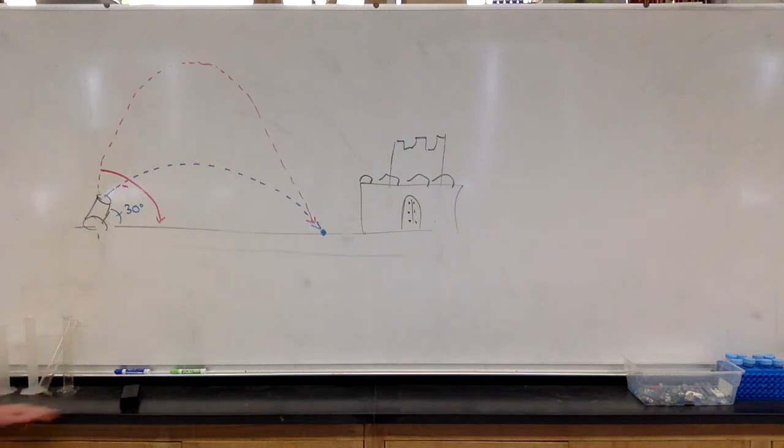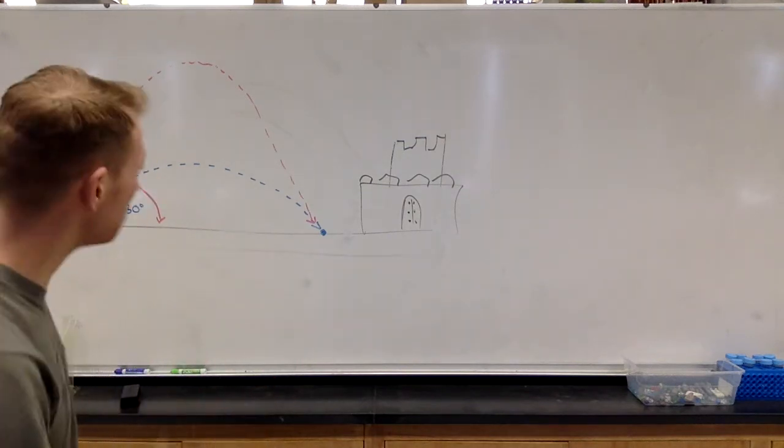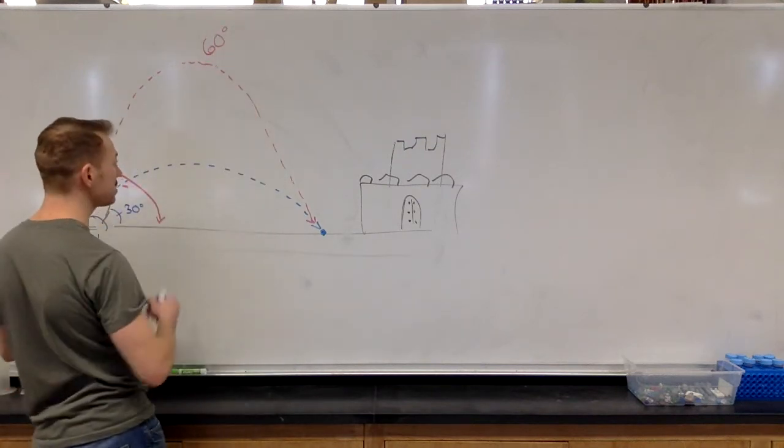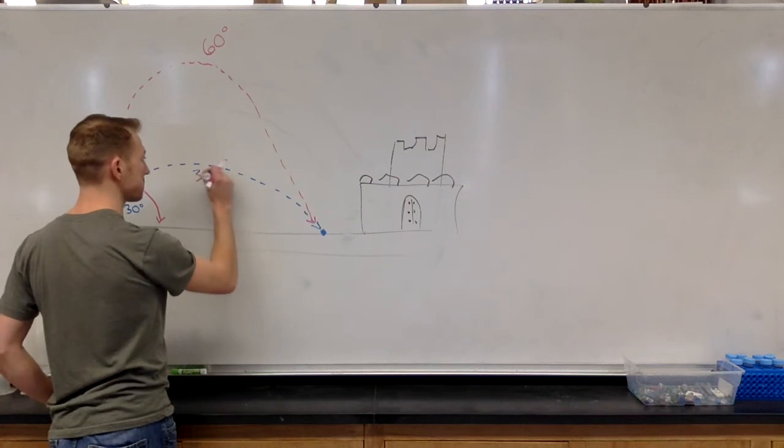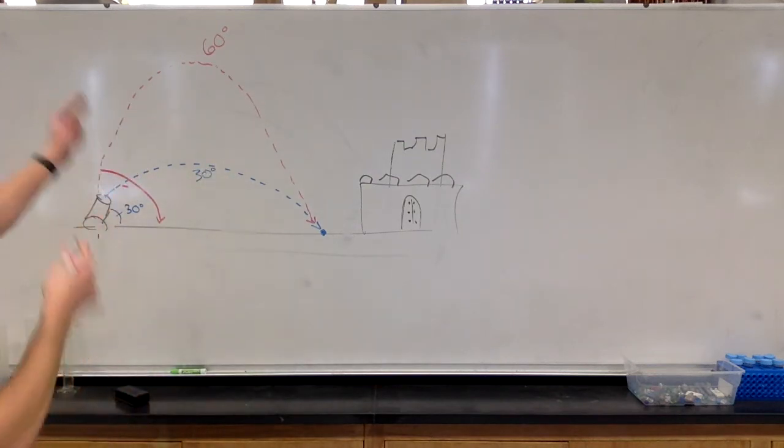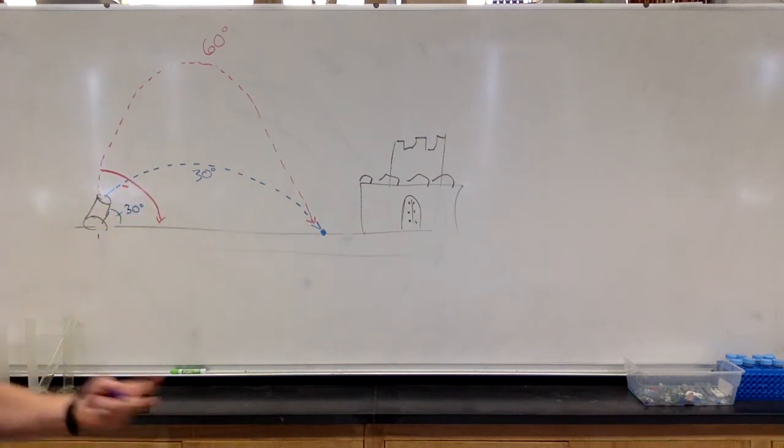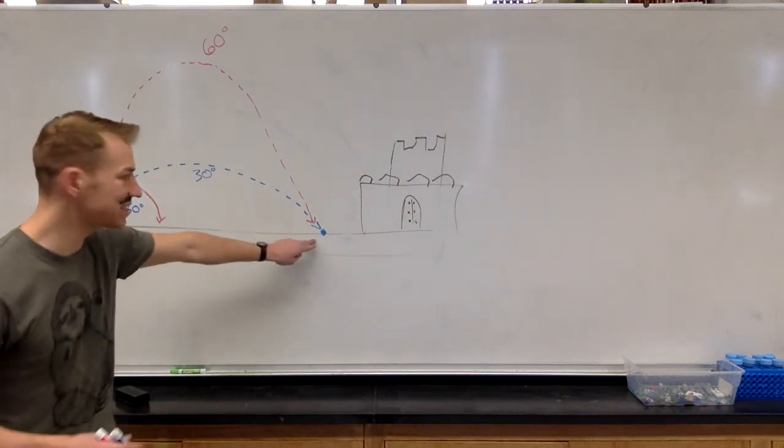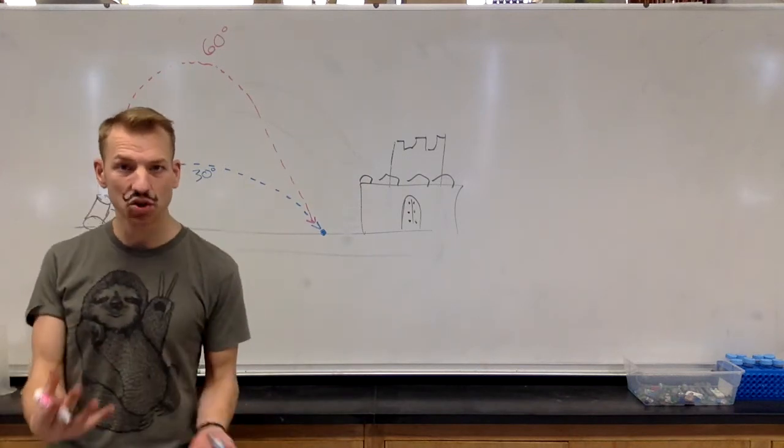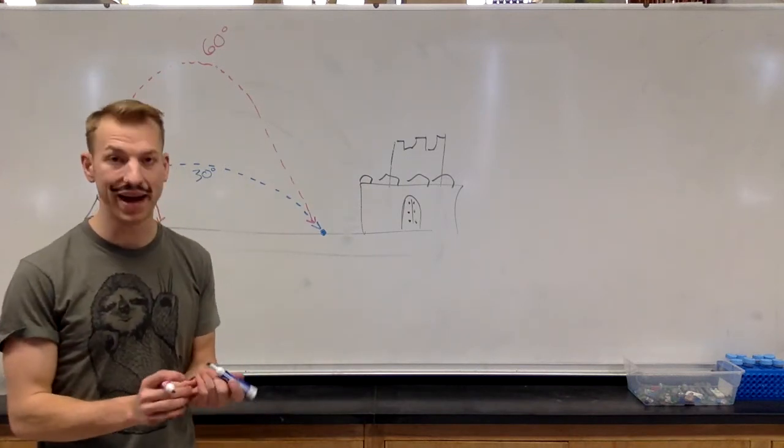But it would actually land the range would be the exact same. We call these two angles, 60 degrees and 30 degrees, complementary angles. In projectiles, if you launch something at complementary angles with the same force originally, then you end up with the same exact range. In fact, this is true for any two angles that add up to 90 degrees.